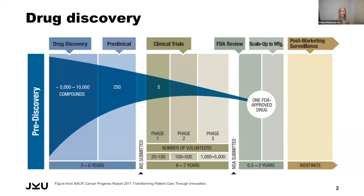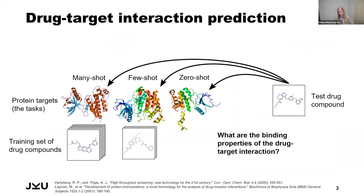With machine learning, we have the potential to make this step much more efficient. This can lead to a greater size of the chemical space being tested, as well as better drug candidates and a greater chance of success for clinical trials. In the machine learning sense, we consider the protein targets to be the different tasks that we would like to model.